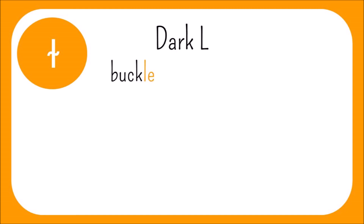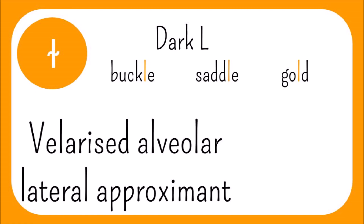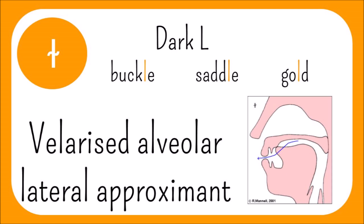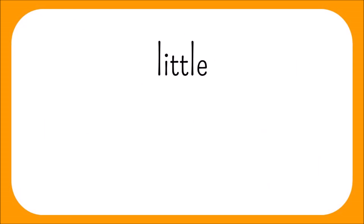We also have dark L, where the sound appears at the end of a word or before a consonant. This is found in words such as buckle, saddle, and gold. The dark L in this position is a velarised alveolar lateral approximant. The back of the tongue is slightly raised, and in some dialects can even morph into an O sound. In the word little, there is an example of both a clear L and a dark L.